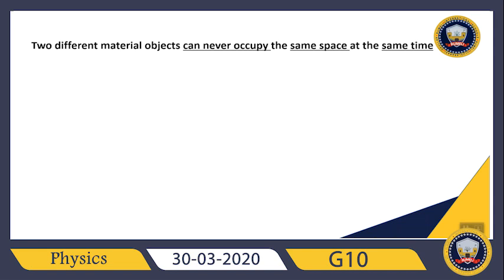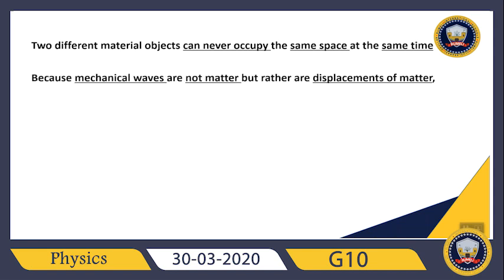Yes, of course you can differentiate between them, although they occur at the same time. Why? Because simply the waves — the mechanical waves, sound waves — are considered mechanical waves, and mechanical waves are not matter. They are not a material object. They are displacement of matter. So they can actually occupy the same space at the same time, unlike any other material object. Because mechanical waves are not matter but rather displacement of matter, the two waves can occupy the same space at the same time.